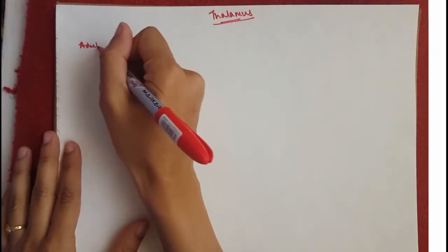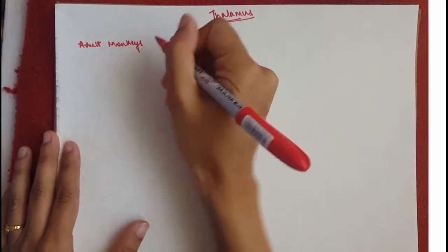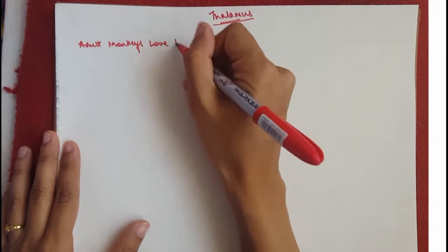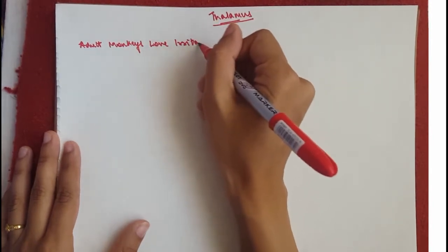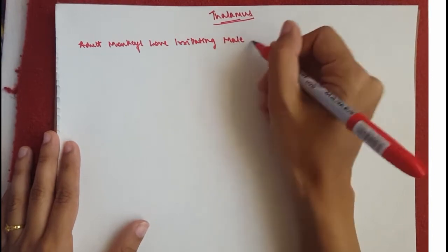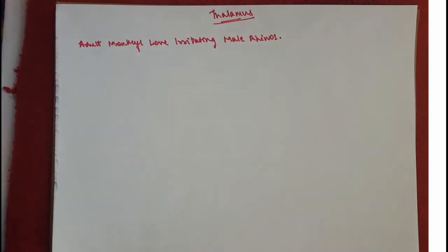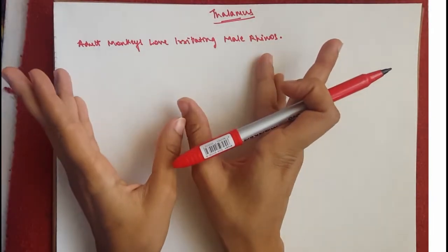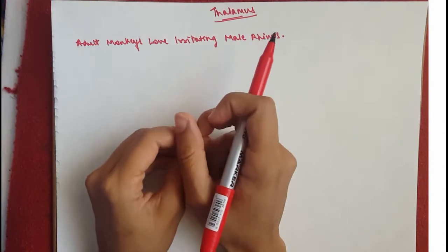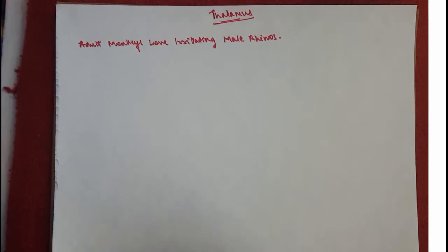It goes adult monkeys love irritating male rhinos. So adult monkeys love irritating male rhinos. Now this is for the names of the nuclear groups of the thalamus and then we can start now.